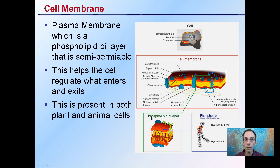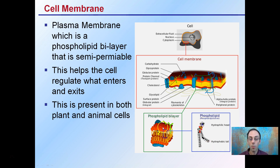The cell membrane, also known as the plasma membrane, is what's called a phospholipid bilayer — a bilayer meaning there are two layers. This helps the cell regulate what can enter and exit, creating a semi-permeable layer. It's present in both plant and animal cells.